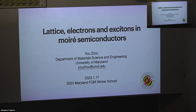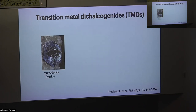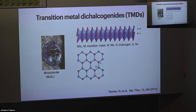We focused on semiconducting Moiré systems, in particular transition metal dichalcogenides, and I will give an overview mainly focused on the lattice structure and how the lattice structure influences both the electronic and also excitonic properties. I will first give a brief introduction and then explain why Moiré semiconductors are interesting for exploring condensed matter physics. We already heard a very nice introduction about transition metal dichalcogenides. These are layered materials — if you look at their mineral form, you can see they have this layered structure.